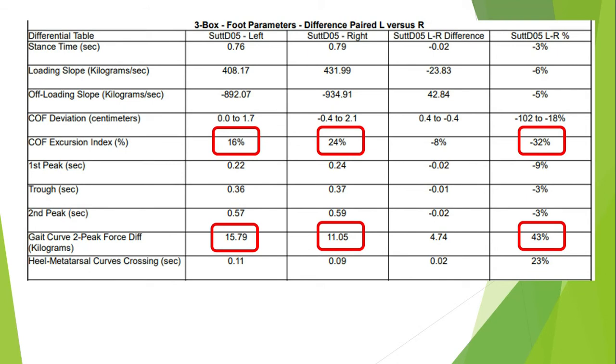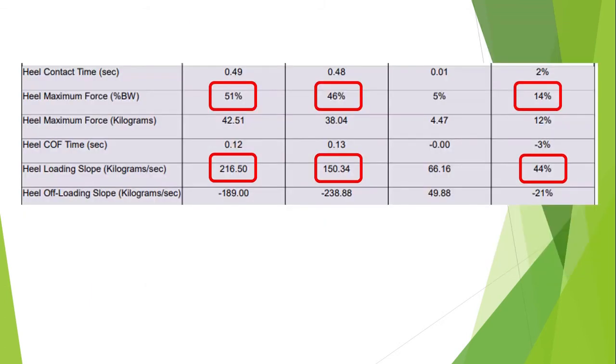Then we can actually go into what we call the foot parameters box. And these tables tell us all about the center of force excursion index and the variables. As you can see, there's a 32% difference from left to right in center of force index. You can see the peak pressure, there's a variation. And as we scroll down to looking at what's happening in the heel, we can see that there is a heel maximum force percentage of body weight, 51% to the left, 46% to the right. And the heel loading is coming off at a different angle also.